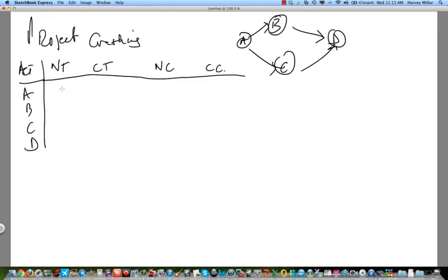All right. So what if A, normal time? Five days. Crash time? Three days. B, 10 days and seven days. 15 days. We could cut that down to 12 days. And D is six days. And we cannot reduce it. All right. So when you look at your normal times, A is five. B is 10. C is 15. And this is six.